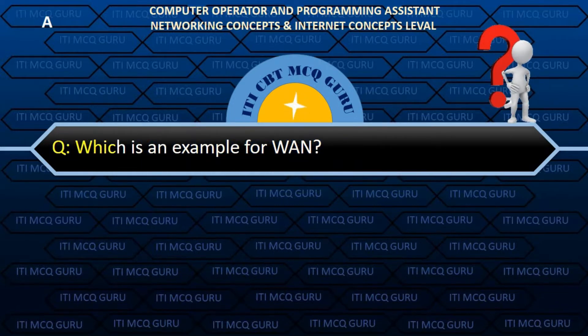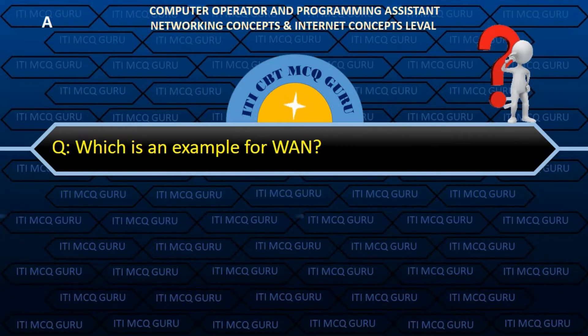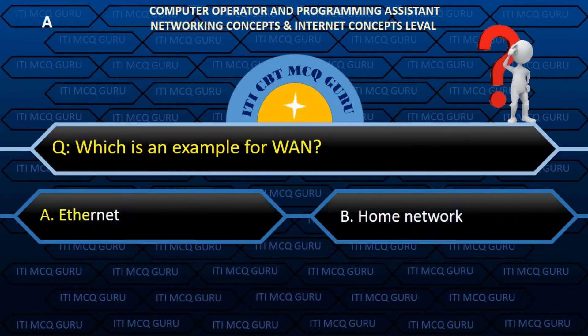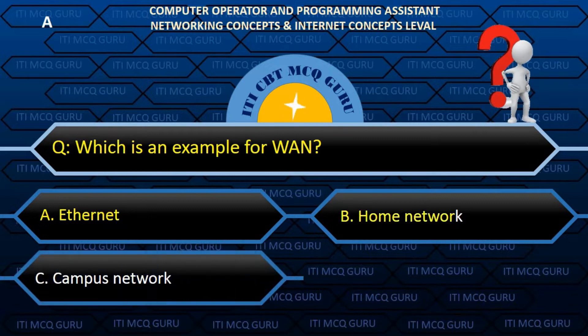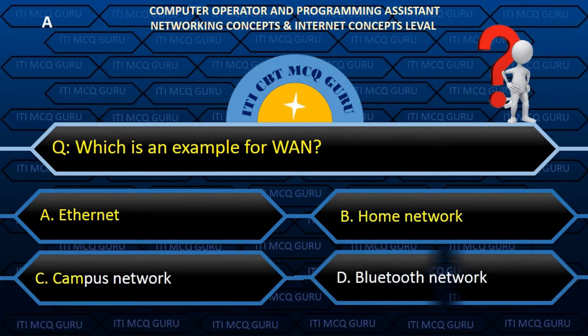Which is an example for WAN? A. Ethernet.